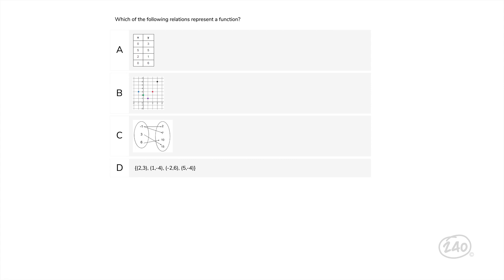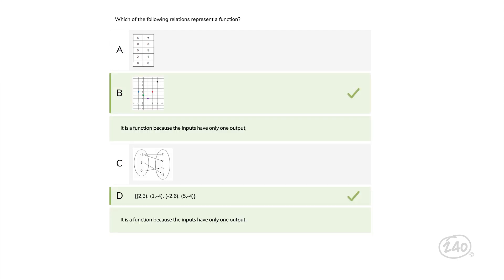So, looking at choice A, there are two zeros in the x column, so it is not a function. In the next choice, each plotted point has a different x value, so it is a function. Then, we move on to see that the input of negative 1 is connected to both 2 and 7. This means it's not a function. Finally, choice D has no repeating x value, so it is a function. So, choices A and C, not functions. Choices B and D, though, those are functions.